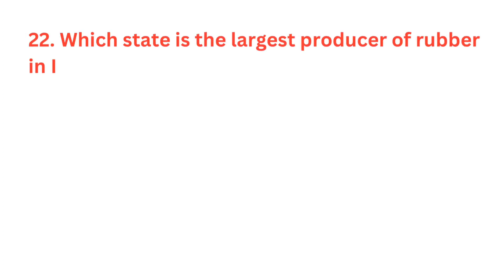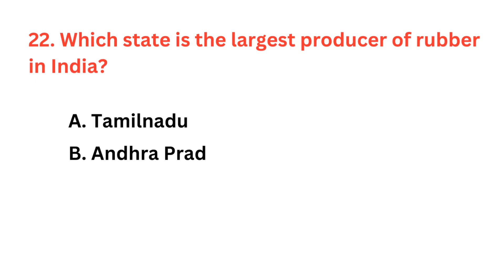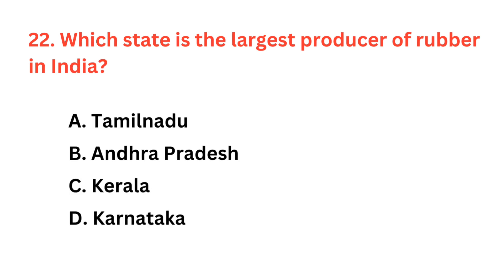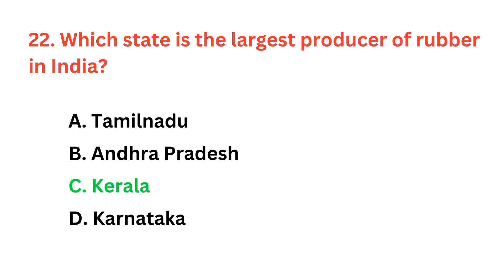Which state is the largest producer of rubber in India? The correct answer is option C, Kerala.